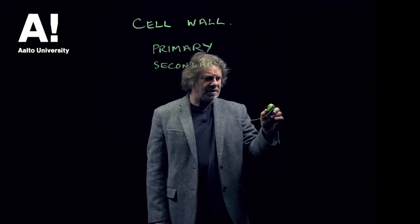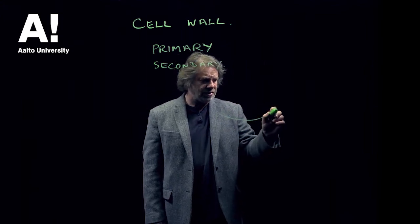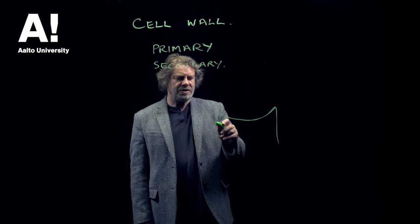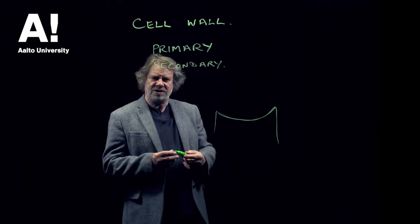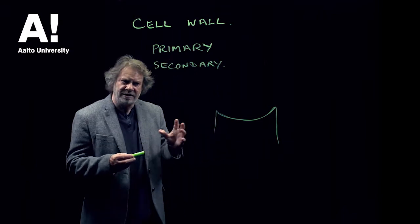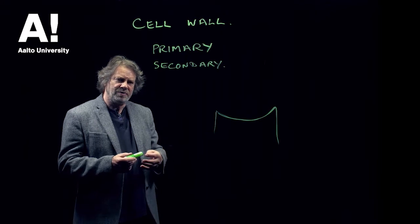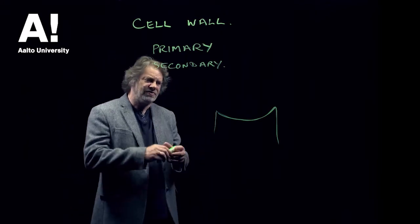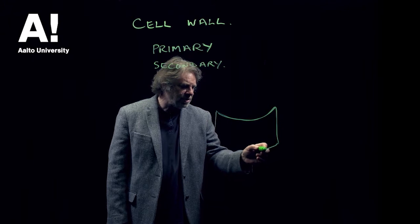You'll see lots of different drawings of the wood cell wall. Sometimes they're drawn square and sometimes they're drawn in a circular fashion. More often than not they tend to be in softwoods at least, a square shape. In hardwoods they tend to be a bit rounder, but it doesn't really matter the exact shape because it does vary from species to species and tree to tree.